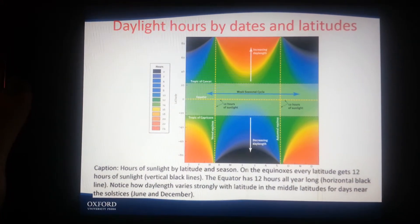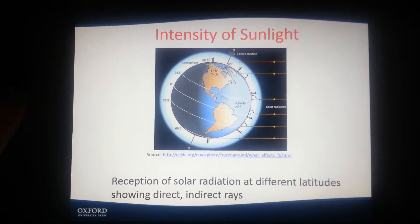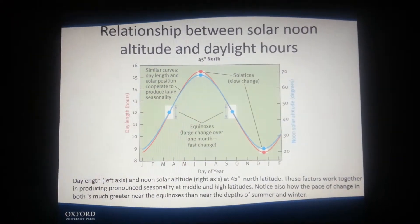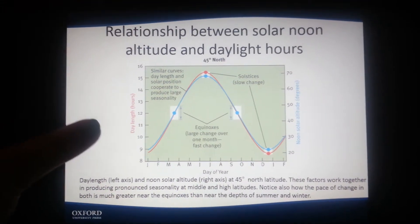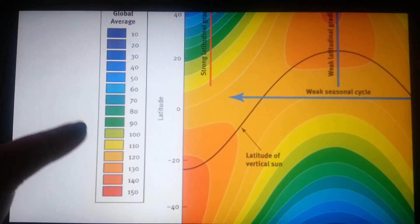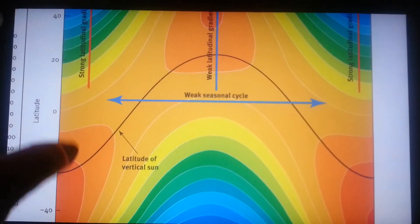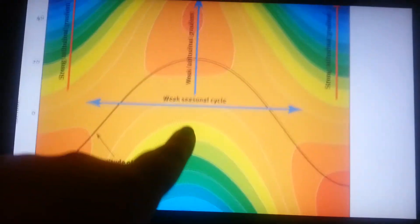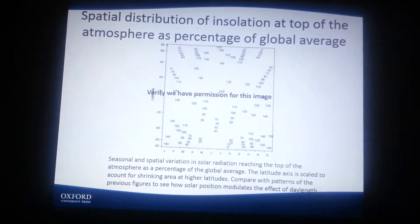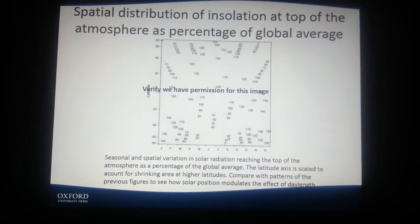And then daylight hours by latitudes and times — shown as an image. Intensity of Sun: reception of solar radiation at different latitudes, showing direct and indirect rays, with most direct rays at the middle and less direct at the top and bottom. And the relationship between solar noon altitude and daylight hours. Values of seasonal differences in time and space show latitude with a weaker seasonal cycle and weaker latitude gradient. The spatial distribution of insolation at the top of the atmosphere is shown as a percentage of global average.